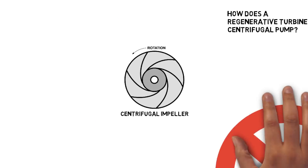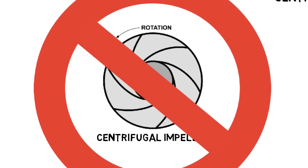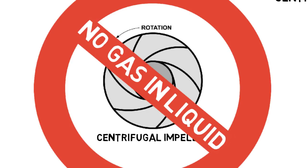Centrifugal pumps are not designed to handle gas in a liquid. Gas in a centrifugal pump can create a significant loss in performance, causing fluctuating flow, discharge pressure, and unnecessary wear and vibration of the centrifugal pump's internal components.